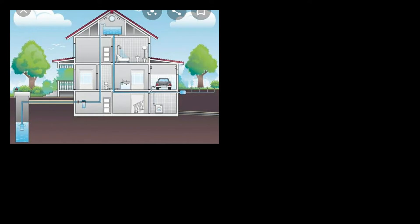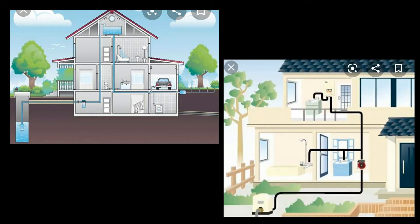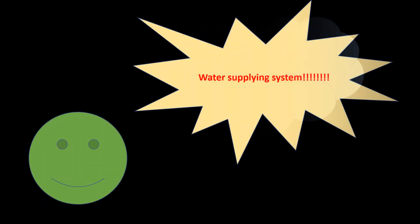Hello students, I am your deputy ma'am. Today we are going to discuss a very interesting topic. Before starting, let's see two pictures and try to find out the similarities. So let's see the first one and the second one — now try to find out the similarities. The similarity is that in both cases the water supplying system of the houses is depicted.